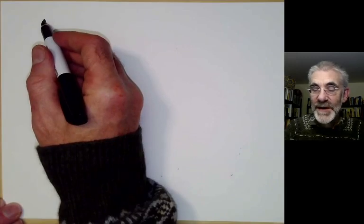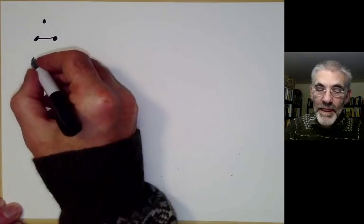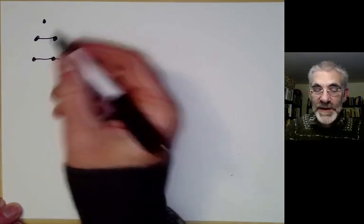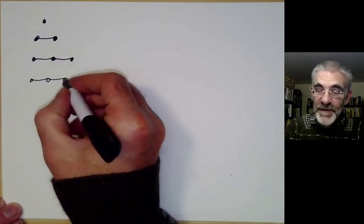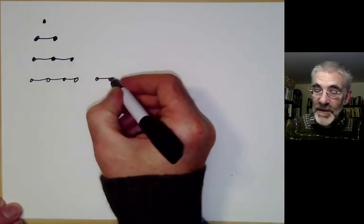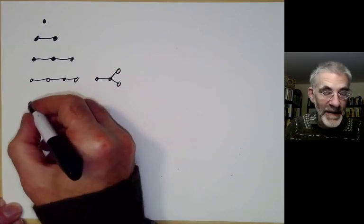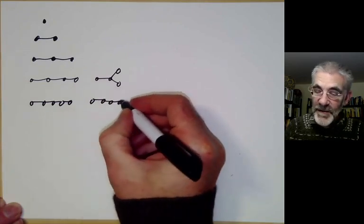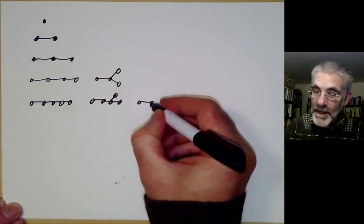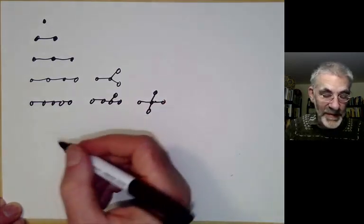If we've got one, two, or three vertices, there's only one possible tree for each. With four vertices, there are two possible trees. For five vertices, we can have a line of five, a line of four with one sticking out, or all vertices joined to a central one, giving three possibilities.